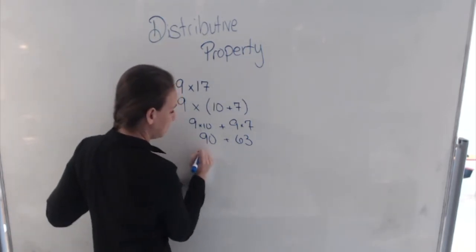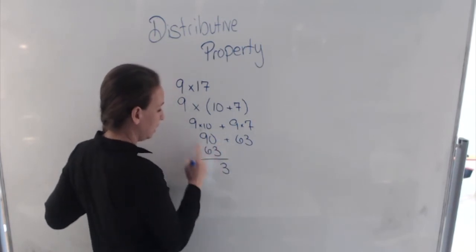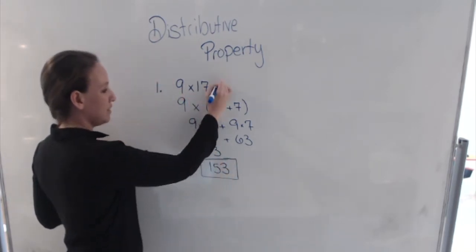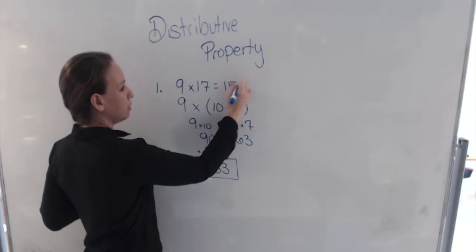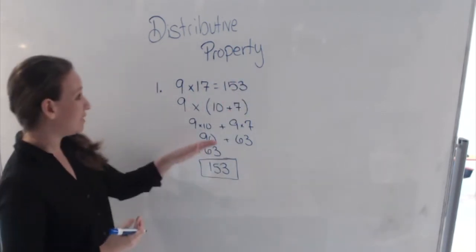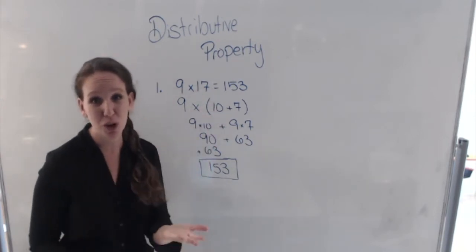So let's line them up. And we get 0 plus 3 is 3, and 9 plus 6 is 15. So 9 times 17 is 153. So, just to recap that, what we did is we took the 17 and made it the sum of two numbers we do know how to multiply.